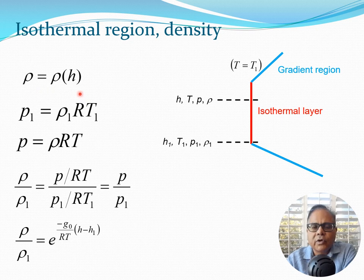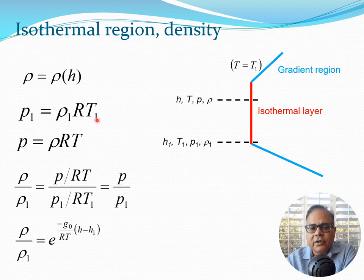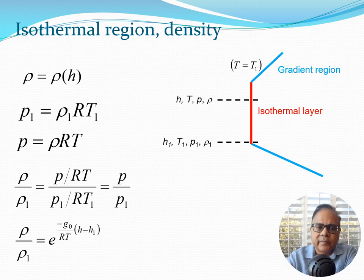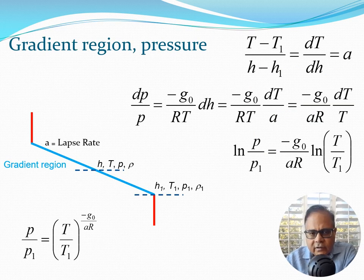For density in the isothermal layer, we have the same two points. Writing the equation of state at both points and dividing gives ρ/ρ₁ equals p/p₁. This means we can write a similar equation: ρ/ρ₁ equals e to the power of minus g₀/(RT) times (h minus h₁). So we've handled the easier isothermal layer. Now let's look at the gradient region.